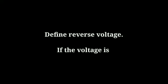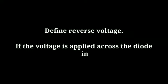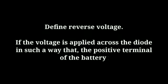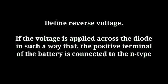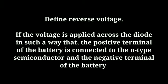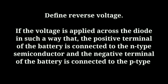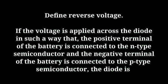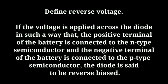Define reverse bias: if the voltage is applied across the diode in such a way that the positive terminal of the battery is connected to the n-type semiconductor and the negative terminal of the battery is connected to the p-type semiconductor, the diode is said to be reverse biased.